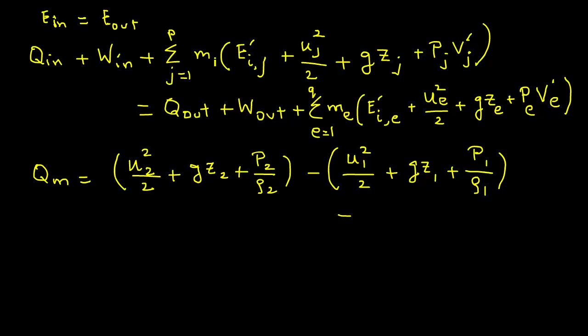Plus, in parentheses, we have EI 2 prime, that is specific internal energy, minus EI prime 1, end of parentheses, plus WM.